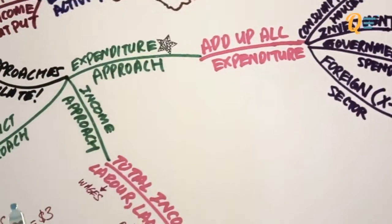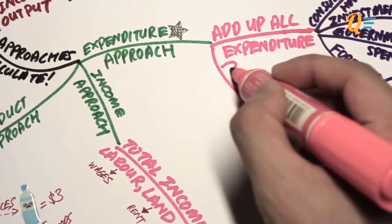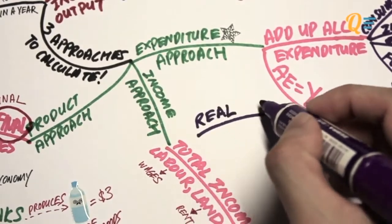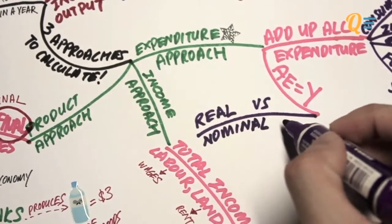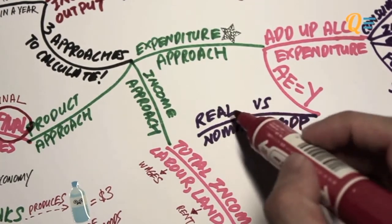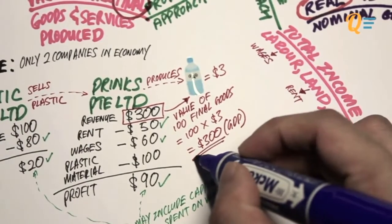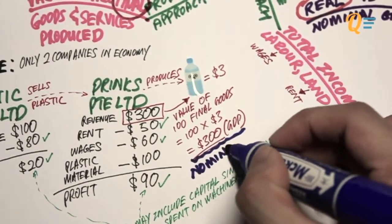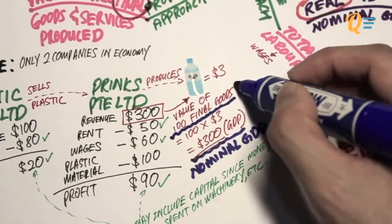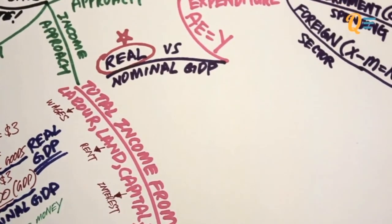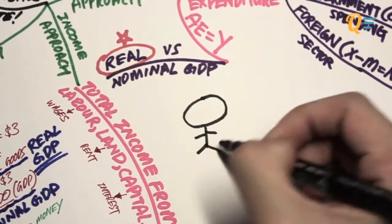We'll talk about the foreign sector in later videos. Before explaining why expenditure equals income, let's touch on real versus nominal GDP. $300 is the nominal GDP, while the actual number of bottles of water is the real GDP. We are always concerned with the amount of goods we can buy rather than the amount of money we have — what's the point of having $1 million if you can only buy one cup of tea?